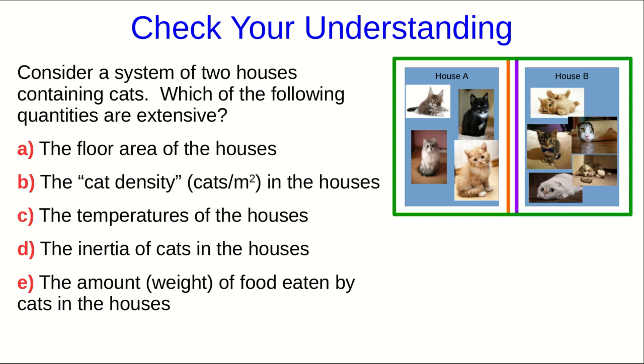The idea of extensive quantities will be central to much of the rest of the course. And so let's make sure you've got the idea. So let's keep thinking about this system of two houses containing cats. And I've listed five quantities. And I want you to decide which of these five quantities are extensive. It's possible that more than one of these is extensive.